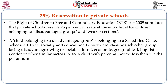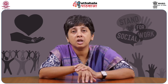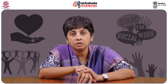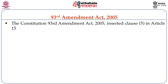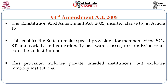Children with parental income less than two lakhs per annum also qualify. Mentally and physically challenged children were included in this definition through an amendment in 2012. So free and compulsory education would be provided not just in government schools but also through the 25% reservation in private schools for children of such families. The Constitution 93rd Amendment Act 2005 inserted clause 5 in Article 15, enabling the state to make special provisions for members of SCs, STs, and socially and educationally backward classes for admission to all educational institutions, including private unaided institutions but excluding minority institutions.